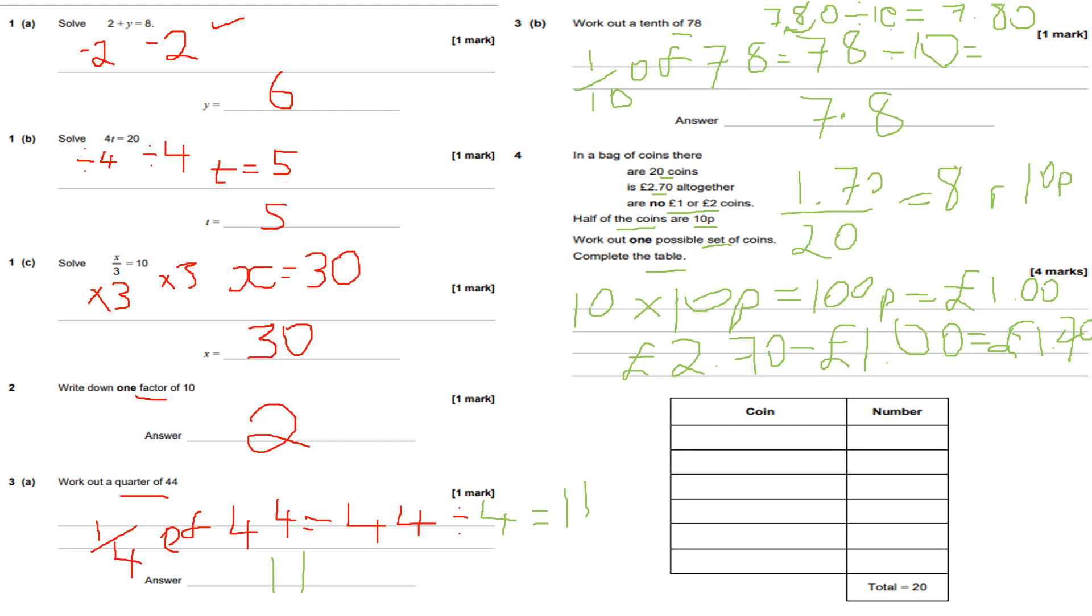So the coin will be 10p. You're going to have 10 lots of 10p, which is one pound. Then you'll have 8 lots of 20p, and then you'll have a remainder of 10p. So then you'll have a 5p coin, and you have two lots of it, because the total number of coins have to add up to 20. 10 plus 8 is 18, 18 plus 2 is 20. So that confirms my answer, and that all adds up to 2 pounds 70. Half of the coins are 10p, half of 20 coins is 10 coins, so 10 lots of 10p coins makes one pound or 100 pennies.